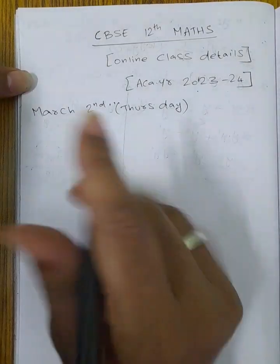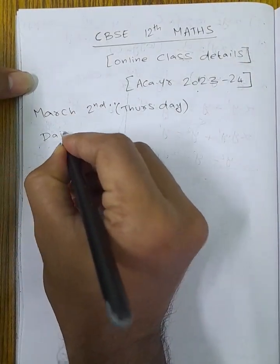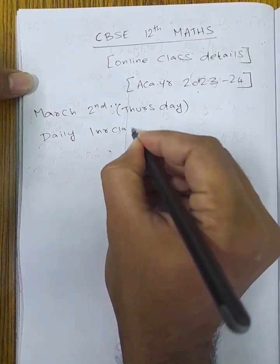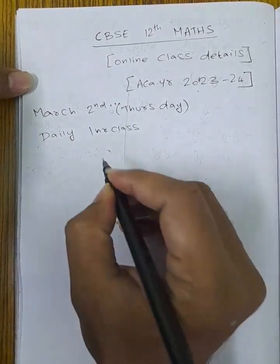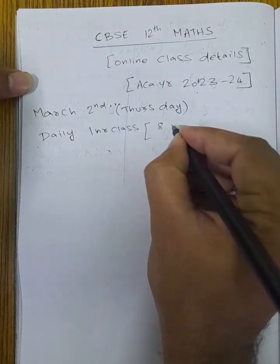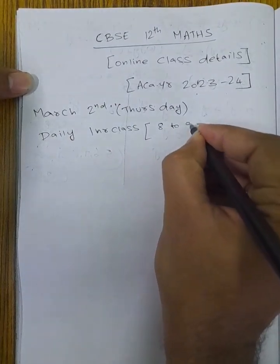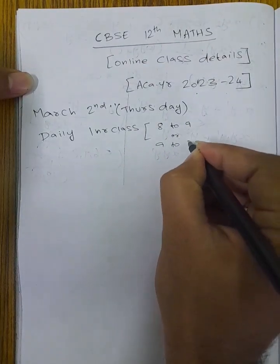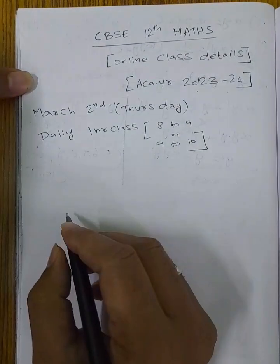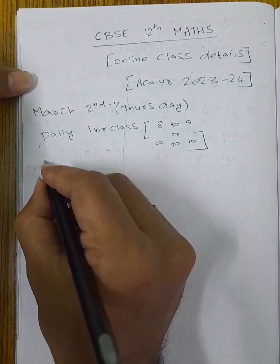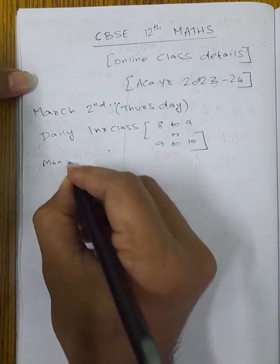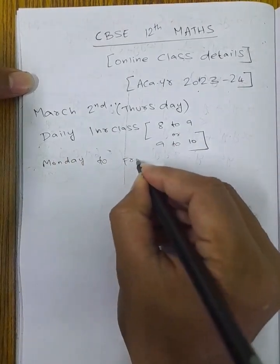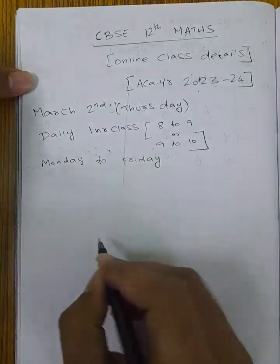Classes are daily 1-hour classes. Timing: one evening session is 8 o'clock to 9, or 9 to 10. This class is Monday to Friday — Monday to Friday is daily class.